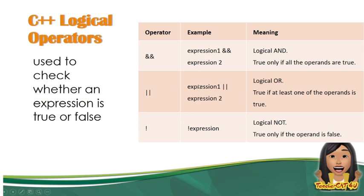When using OR — for example, Expression 1 OR Expression 2 — even if just one of the two expressions is true, the expression will automatically become true. Then we have NOT. When you place NOT on an expression, it reverses its equivalent value. For example, if your expression is equivalent to true and you apply NOT, then NOT true is equivalent to false.